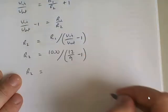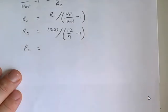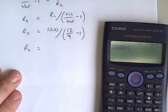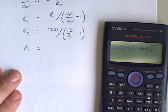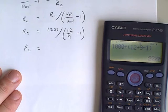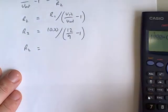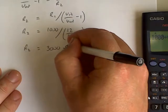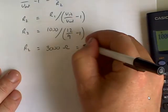R2 equals 1000 divided by, brackets, 12 upon 9 minus 1, close brackets. 3000. So we're getting 3000 ohms. Equals 3K.